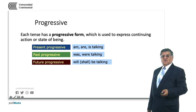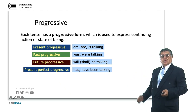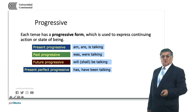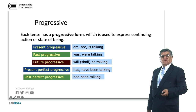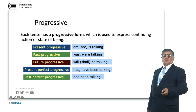The future progressive uses will or shall be talking. Remember that shall is used for the first person singular and plural. The present perfect progressive also uses the verb to be: has/have been talking. In the past perfect progressive, being is the past participle form of to be, and had is the auxiliary — had been talking — the main verb in the -ing form.